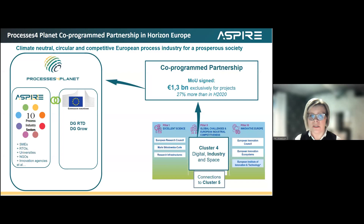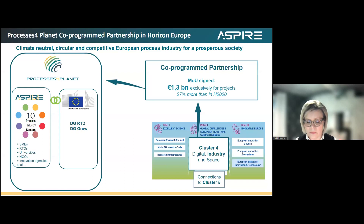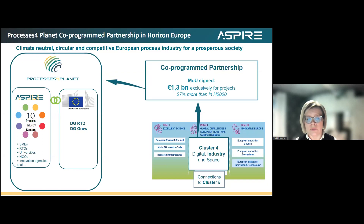We have joined forces with the European Commission under the co-programme partnership called Processes for Planet, where we are aiming to gather 1.3 billion euros for process industry related projects from the Horizon Europe program. We are mostly focusing on cluster 4, digital industry and space, and also cluster 5 because energy is mostly there. So this is a joint effort to represent the process industry approach and what are the important questions for the process industry.